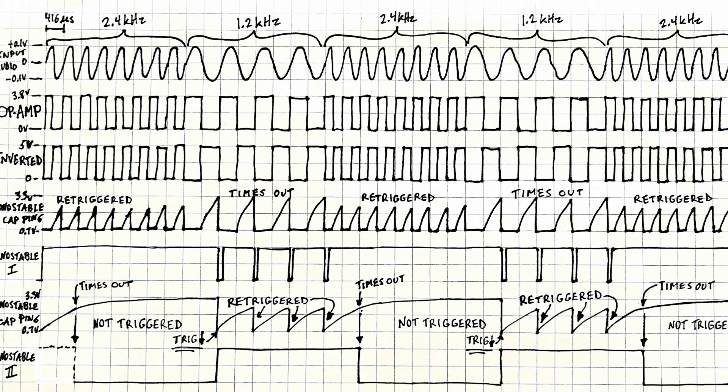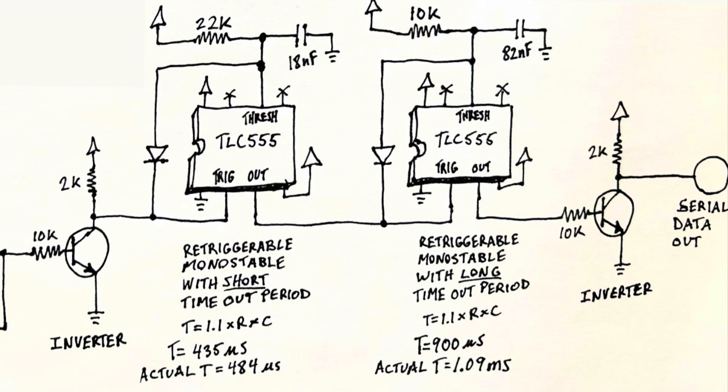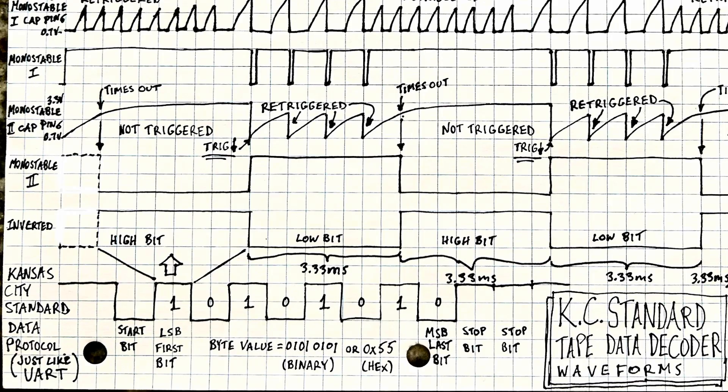The resulting waveform is high when the clock is fast and low when the clock is at 1.2 kHz — which is the inverse of what we want. So the final step is to pass it through a simple transistor-based NOT gate inverter, which gives us the correct serial data output. The resulting timing diagram shows each bit now inverted.